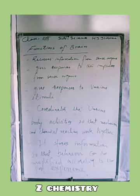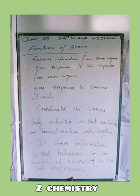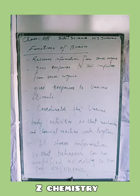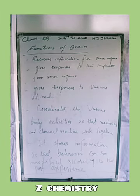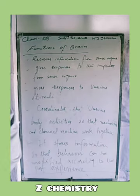The brain coordinates the various body activities so that the mechanisms and chemical reactions of the body work together efficiently. It is very important to coordinate so that the body functions and chemical reactions work together in an efficient way.